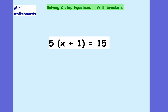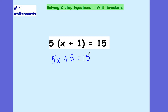In your light blue books, can you please write this one for me: 5(x plus 1) equals 15. Expand that bracket and solve it for me. Pause the video for a minute and work it out. Hopefully you'll have worked out that expanding the bracket gives 5x plus 5 equals 15. If I subtract 5 from both sides, I've got 5x equals 10, which gives me that x is equal to 2.